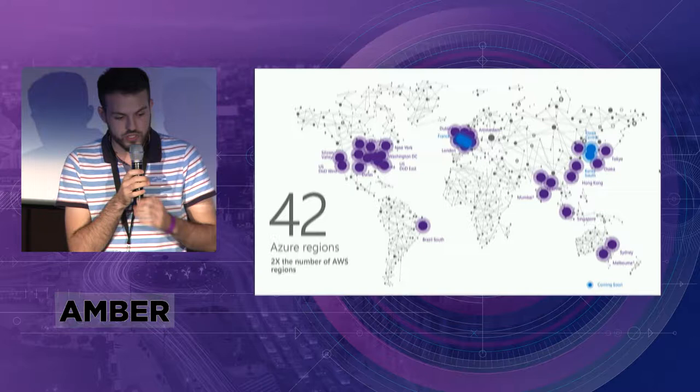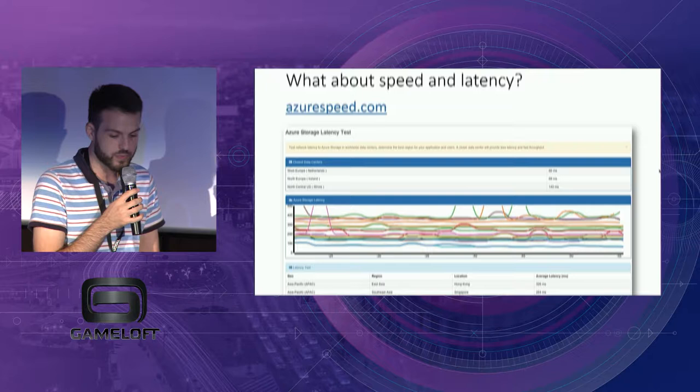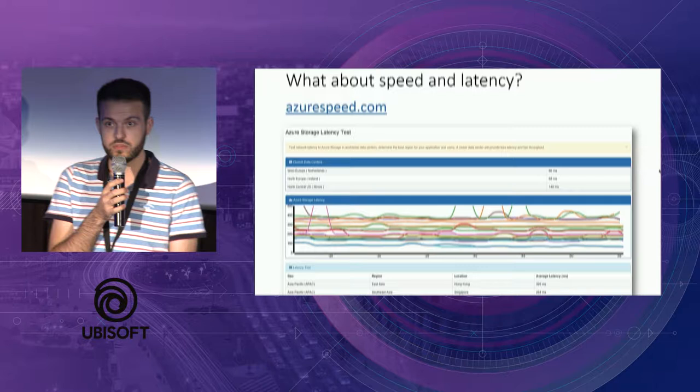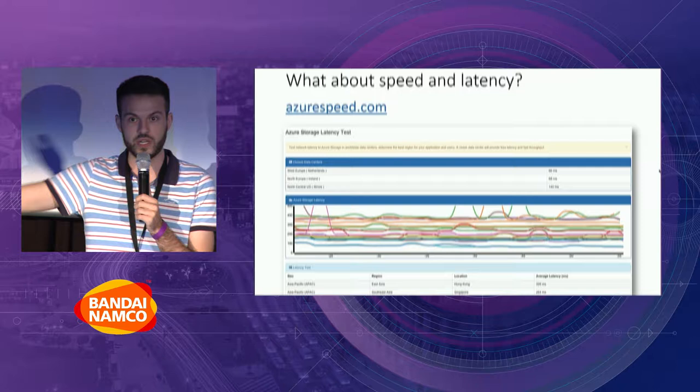In terms of geo-coverage, as I said, there are 42 regions in Azure. For each service that you want to use — even if it's storage, virtual machines, containers, or whatever — you can test the individual service for latency. You can select the data center and test what the latency is for your specific service when you're in Brazil or when you're in Japan.